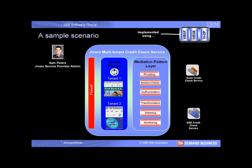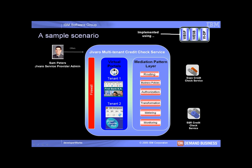Our scenario involves a sample multi-tenant banking application called Javaro which has two tenants, First Bank of North America (First Bank) and Second Canada Bank (Second Bank). The Javaro Service Provider Administrator, Sam Peters, would like to offer a new credit check web service integrated with two external service providers, Expo and SNR. He would like to enable multi-tenancy without any code changes to his existing single tenant services.